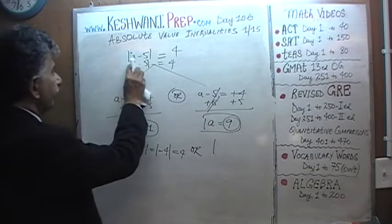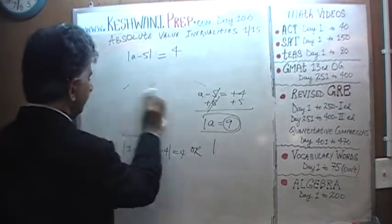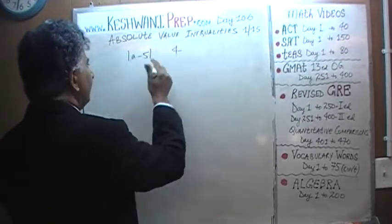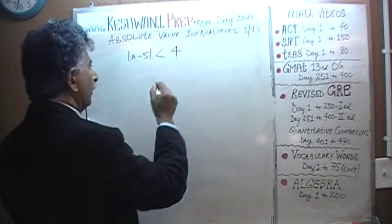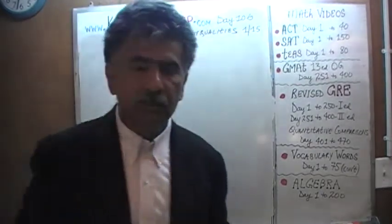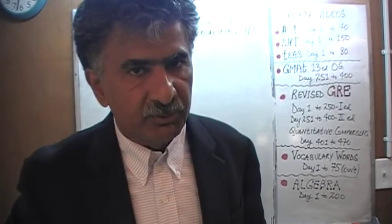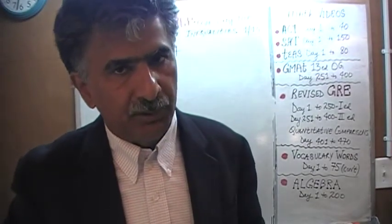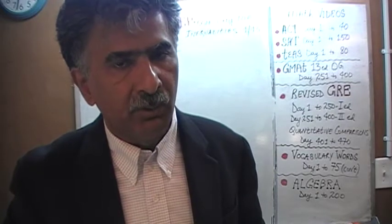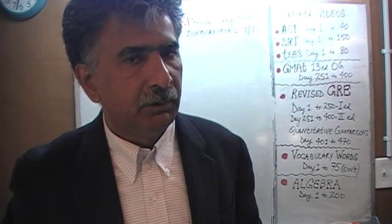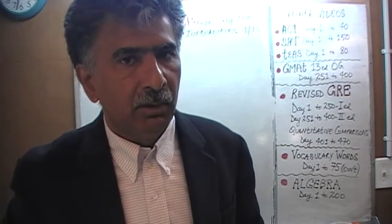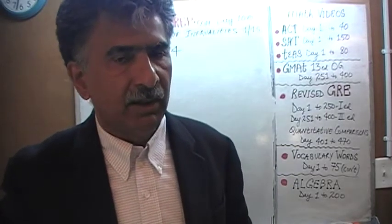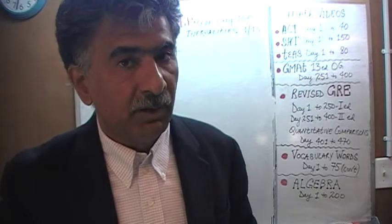Now let's deal with inequalities. What we will see is that the demarcation points we just found — 1 and 9 — are not going to go away. They are going to appear and reappear whether we are dealing with a greater than or less than sign. 1 and 9 play a significant role here as our points of demarcation.